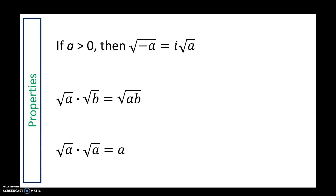If a is greater than 0, then the square root of negative a equals i times the square root of a. Also, square root of a times square root of b — as long as the roots are equal and you're multiplying, you can multiply the values underneath to get square root of a times b. And square root of a times square root of a becomes square root of a squared, which equals a. Note that a must be positive.